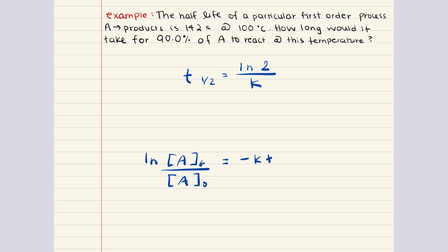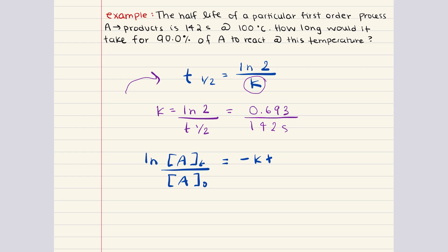Our first step is to determine k from the half-life expression. Rearranging: k = ln(2) / t½ = 0.693 / 142 seconds. Plugging this into a calculator gives k = 4.88 × 10⁻³ inverse seconds.